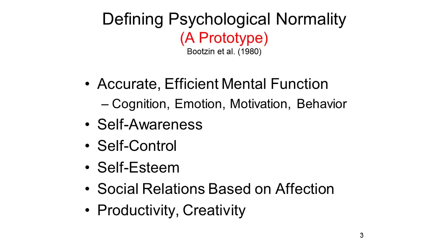The first of these is accurate and efficient cognition and other aspects of mental function. Normal people generally see the world the way it really is, remember things the way they actually happened, and think clearly and communicate comprehensively. Beyond cognition, they tend to have feelings and desires appropriate to the situation and behave accordingly. Normal people are also generally aware of their thoughts, feelings, and desires, and of their behavior and its impact on others. They are generally able to control their impulses and emotions and are able to delay gratification.